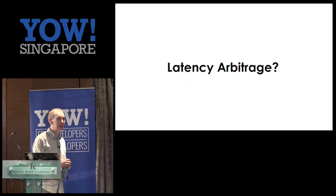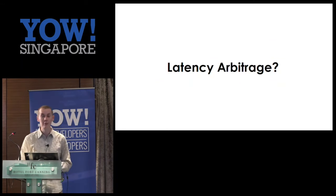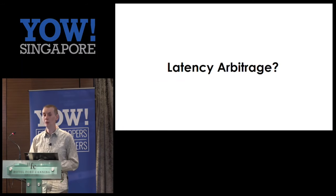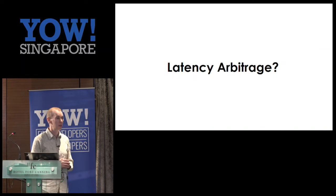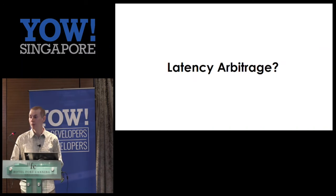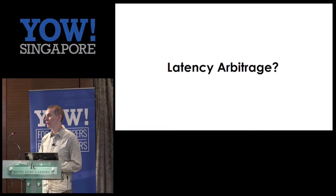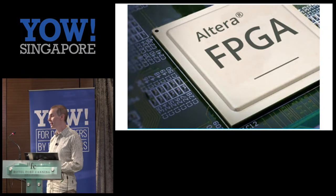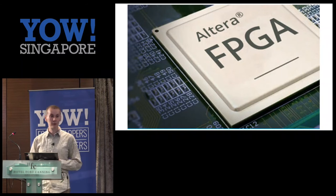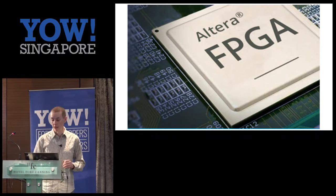Here's one very simple example: latency arbitrage. If you're trying to be the absolute fastest in the market, you're trading time. Would you be writing Java? Would you be writing C? Neither of those. What you're typically doing is programming hardware directly — FPGAs or ASICs in the switch itself right next to the exchange. So it's a very different kind of world. I'm not talking about that.